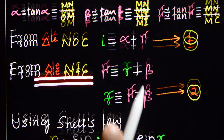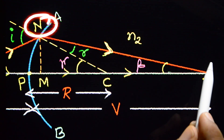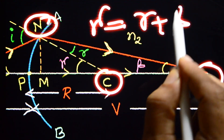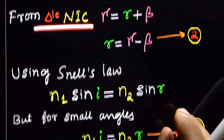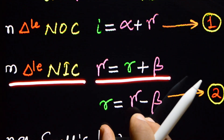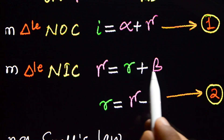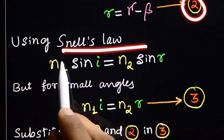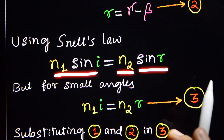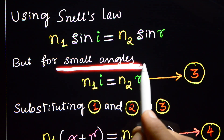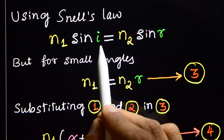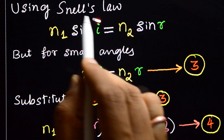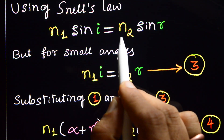From triangle NIC, gamma is the exterior angle. Therefore, gamma = r + beta, which gives r = gamma − beta. That is our second equation. Using Snell's law: N1 × sin(i) = N2 × sin(r). Since i and r are very small, sin of a small angle equals the angle itself, so: N1 × i = N2 × r. This is equation 3.